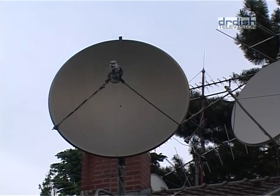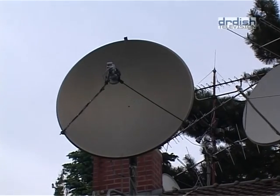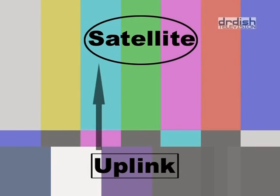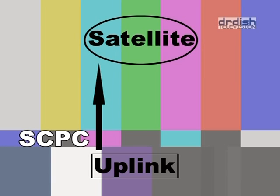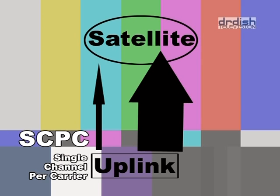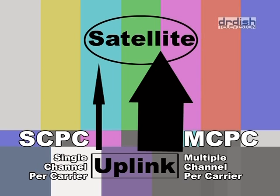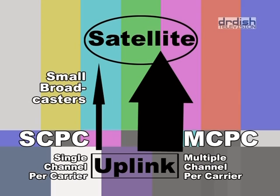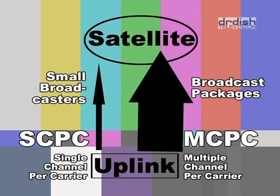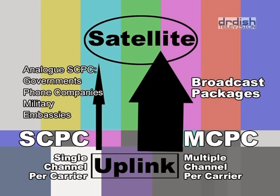Analog SCPC and FDM are alive indeed, and we would like to briefly explain to you what it is all about. Most viewers are probably familiar with the term SCPC. The abbreviation stands for Single Channel Per Carrier. Small TV stations use this transmission method in digital television if they are not part of a bouquet. Analog SCPC is used nowadays for audio communication. Low-power terminals are sufficient to establish a reliable connection in regions with no or poor communications infrastructure. Government offices, telephony operators, the military and embassies use this means of communication via satellite.